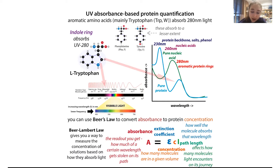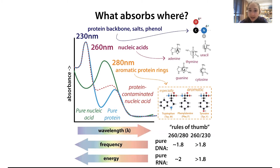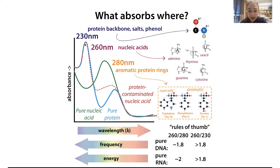You might wonder why we look at the protein absorbing at 280 rather than just the rings. In the protein backbone, you have resonance in the peptide bonds — the peptide bond is resonance stabilized — so you also get some absorbance there. This needs higher energy, so it absorbs at the shorter wavelength of 230 nm. You can see less extensive conjugation there requires higher energy, explaining the 230 nm absorbance.